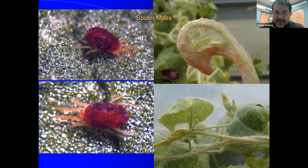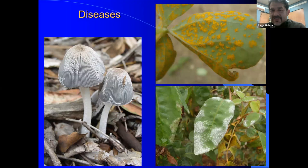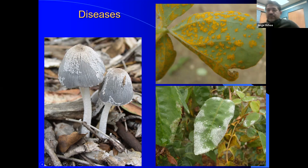Diseases caused by fungi are also prevalent and can have a significant impact on plants. Examples include rust, as in the case of oxalis rust, and powdery mildew, as seen on roses.